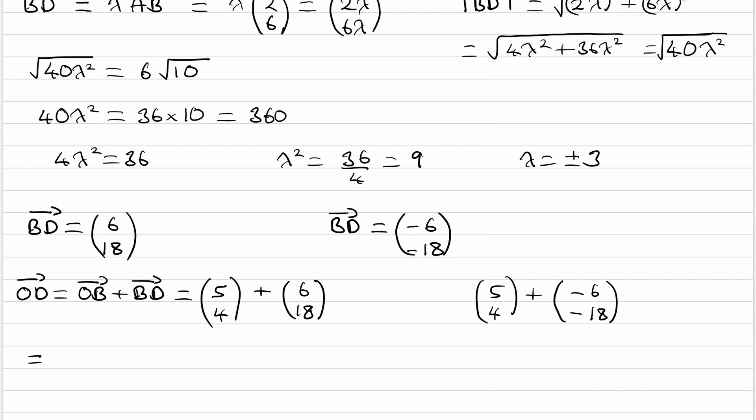So then our two possible answers are, these two added together, which would be (11, 22), or these two added together, which would be (-1, -14). And those are our two answers, our two position vectors of D. Thank you.